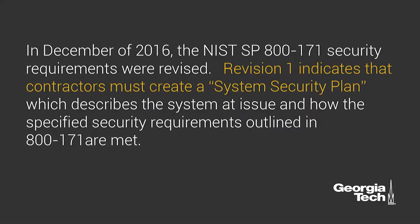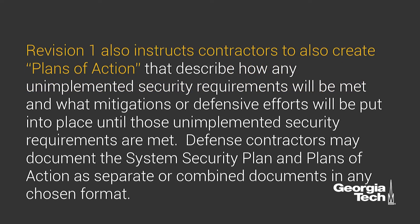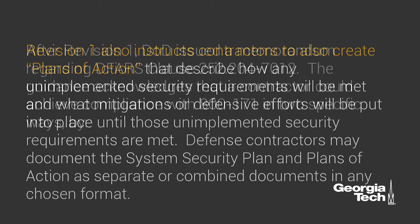In December of 2016, the NIST SP 800-171 security requirements were revised. Revision 1 indicates that contractors must create a system security plan, which describes the system at issue and how the specified security requirements outlined in NIST SP 800-171 are met. Revision 1 also instructs contractors to create plans of action that describe how any unimplemented security requirements will be met, and what mitigations or defense efforts will be put into place until those unimplemented security requirements are met. Defense contractors may document the system security plan and plans of action as separate or combined documents in any chosen format.